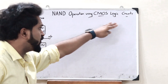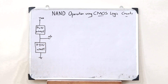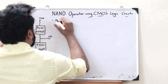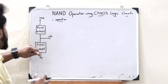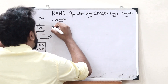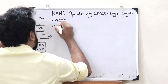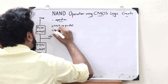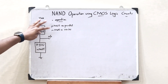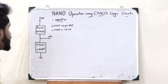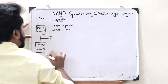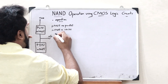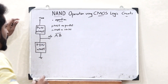This is how a CMOS logic circuit has to be designed. Now, in the case of a dot (AND) operation, all the PMOS transistors must be in parallel, whereas all the NMOS transistors must be in series. NAND operation is nothing but A dot B, the whole complement — that is the NAND operation.